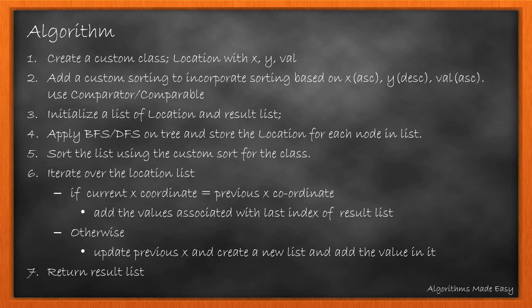We now iterate over the location list and check if current x-coordinate is equal to the previous x-coordinate. If yes, we add the value associated in the same list. Otherwise, we create a new list and add the value in it. At the end, we return the result list.